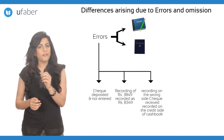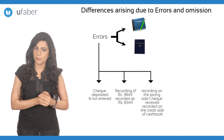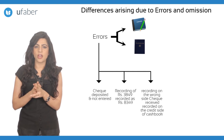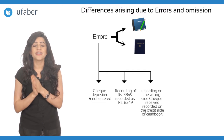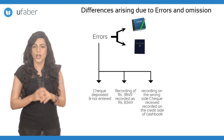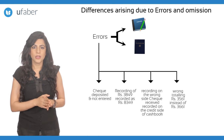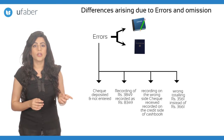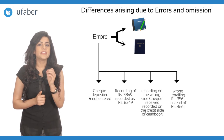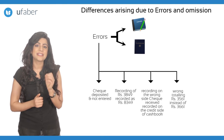3. Recording of an entry on the wrong side of the book. For example, a cheque received of Rs. 5000 recorded on the credit side of the cash book. 4. Wrong totalling of the account. For example, a page total erroneously written as Rs. 3561 instead of Rs. 3661.